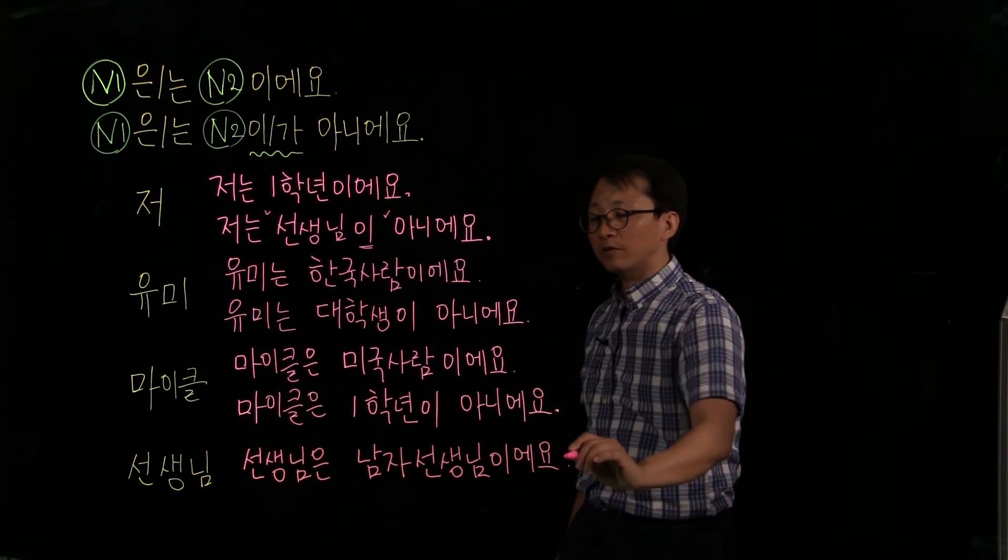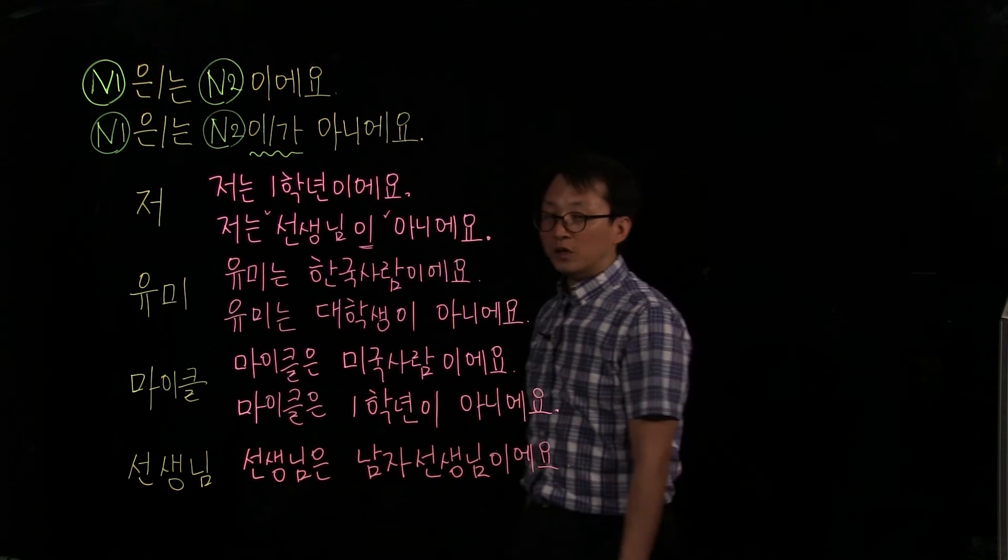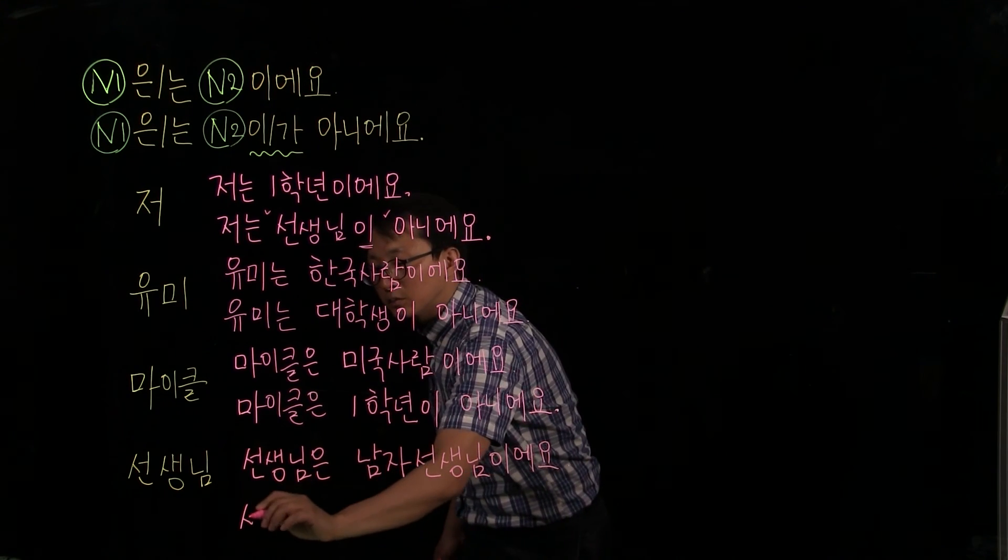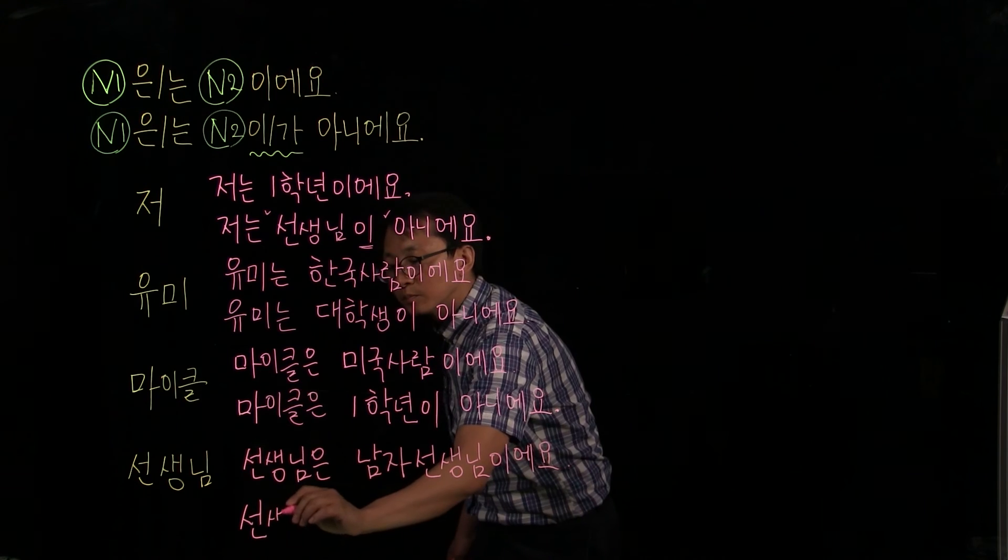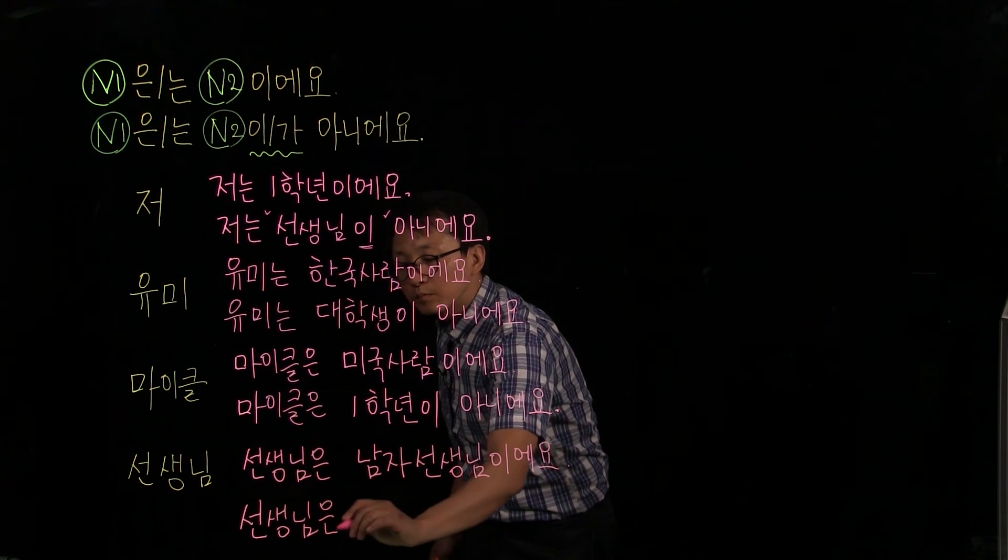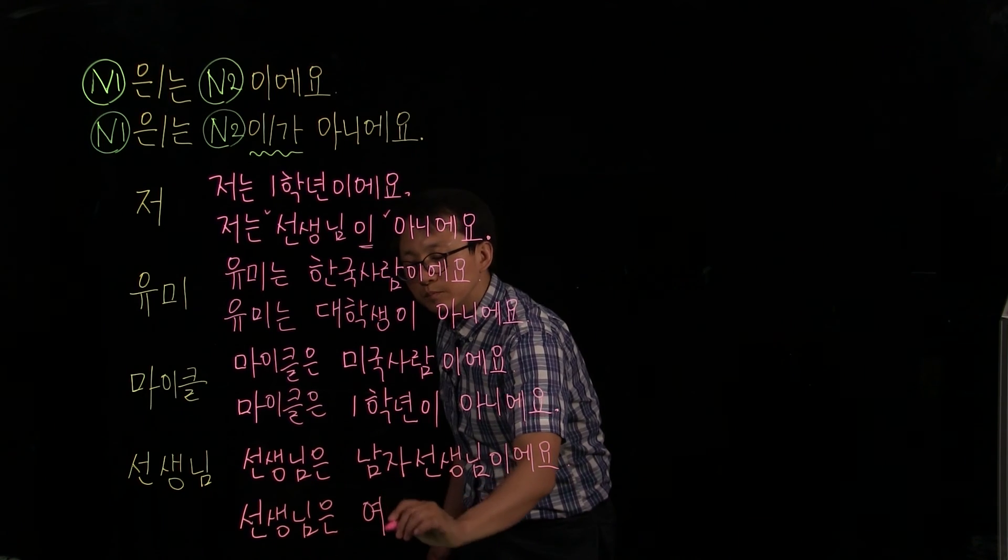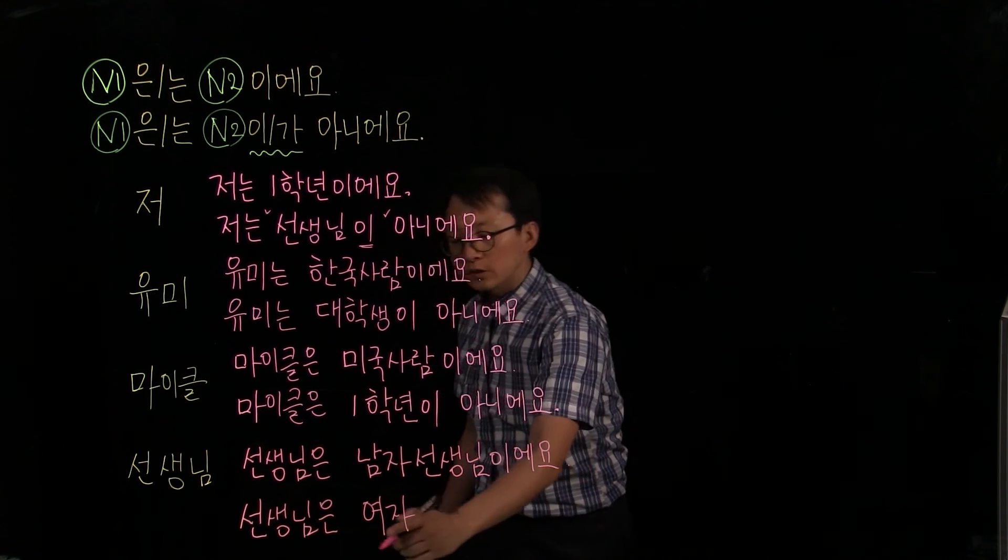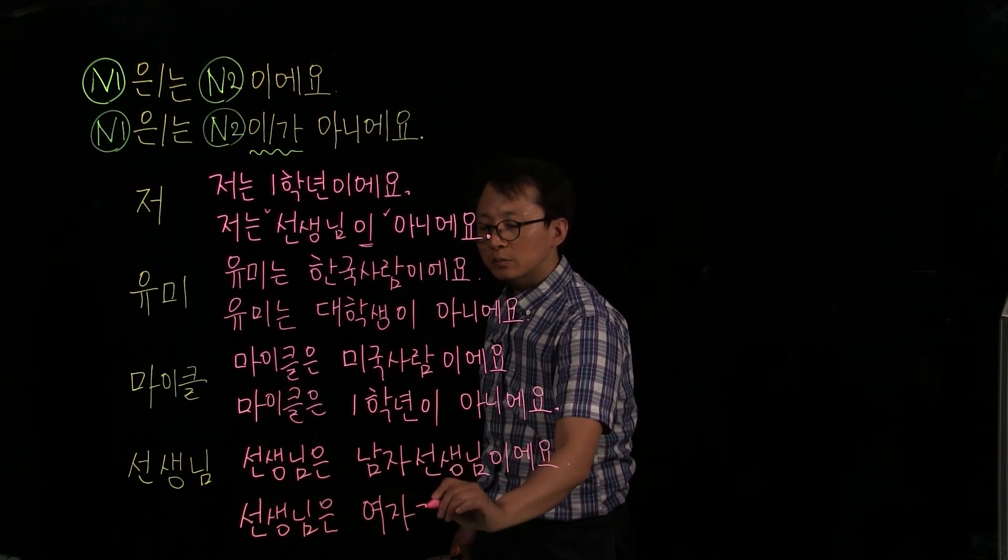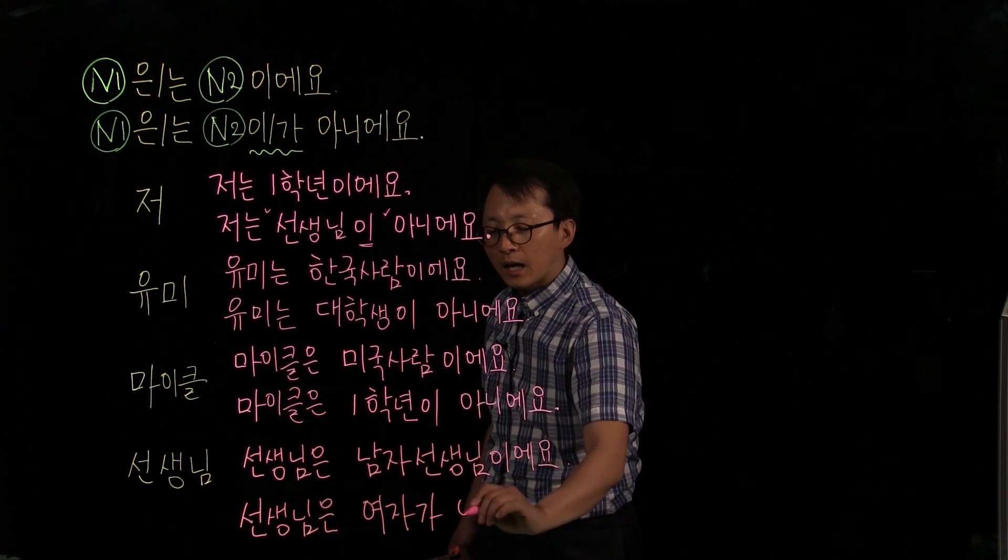So let's describe this in a different way. My teacher is not 여자, woman. 선생님은 여자. 여자 is woman, and there's no consonant, so we need this particle 가. 아니에요.